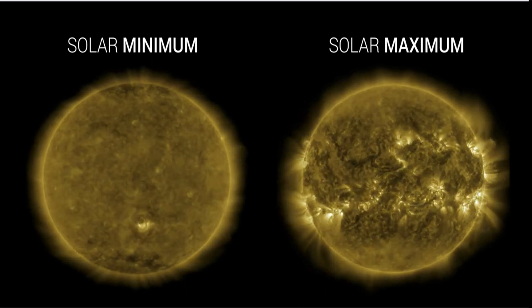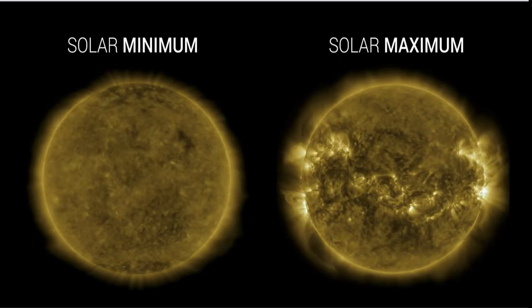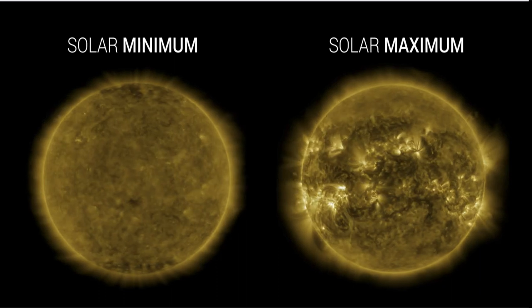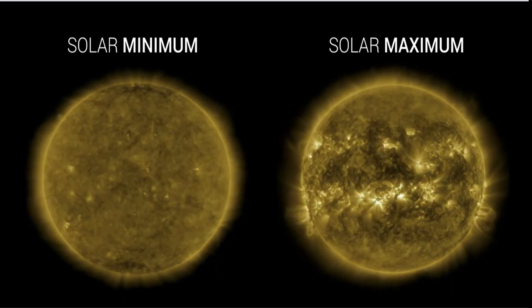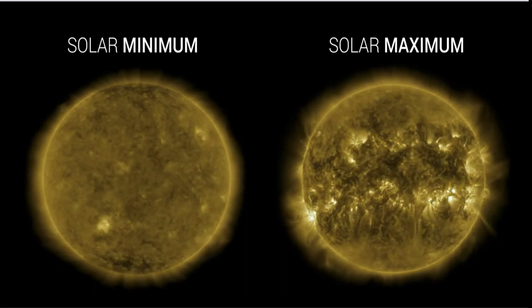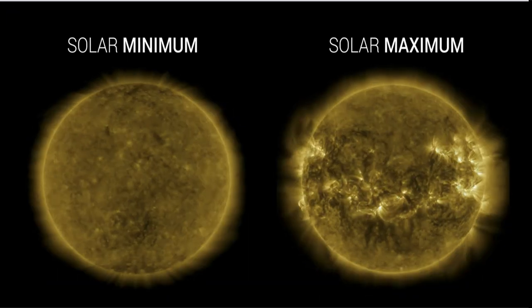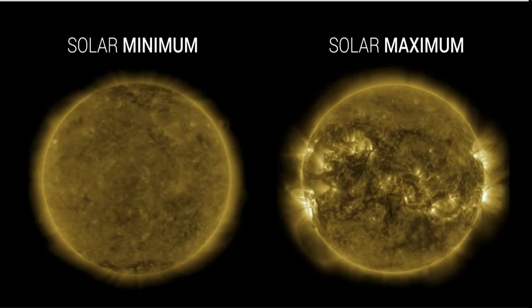On the left we see the sun near solar minimum and there's very little activity going on there. You can see a little bit in terms of prominences and material bulging out and coming out from different brighter areas which are the higher active areas. Most of it is very calm, not a whole lot going on. You can see the big difference when you compare this to what we see on the right hand side.